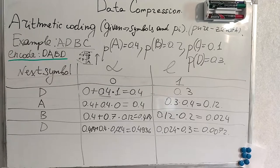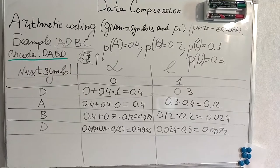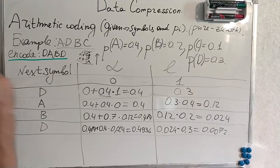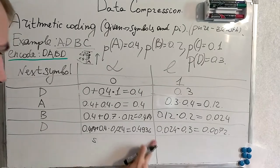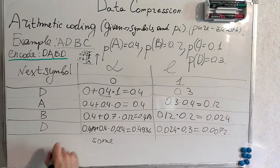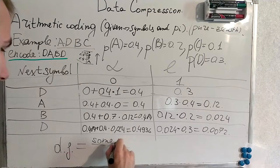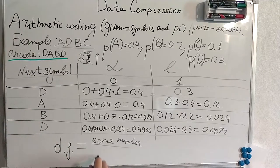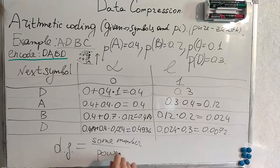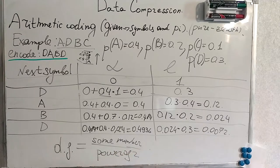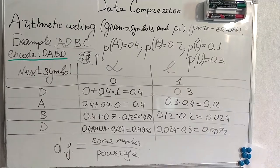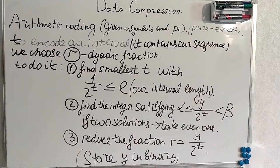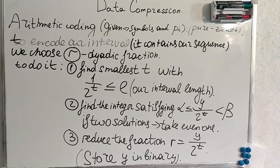We will choose some number which is dyadic fraction inside this interval. The dyadic fraction is such a number where we have some number in numerator, and here the number has to be some power of 2. Absolutely any.